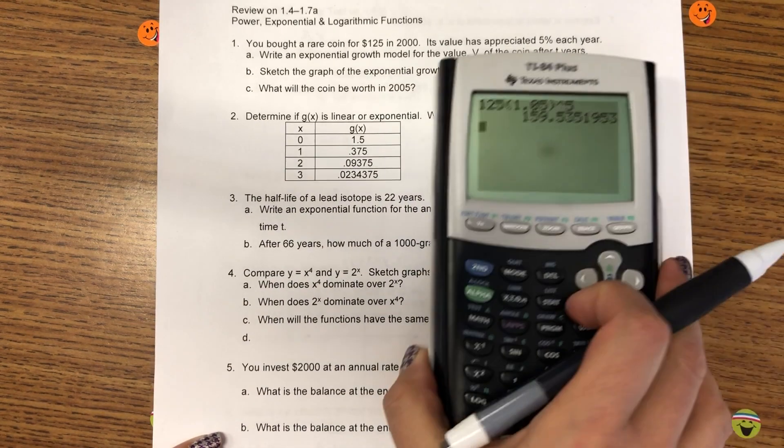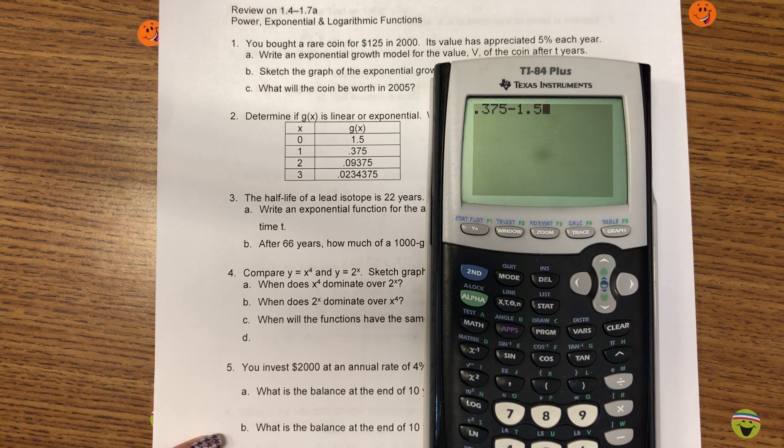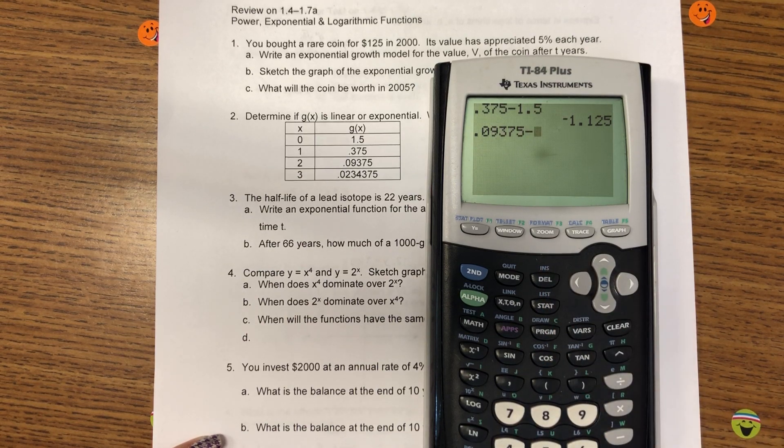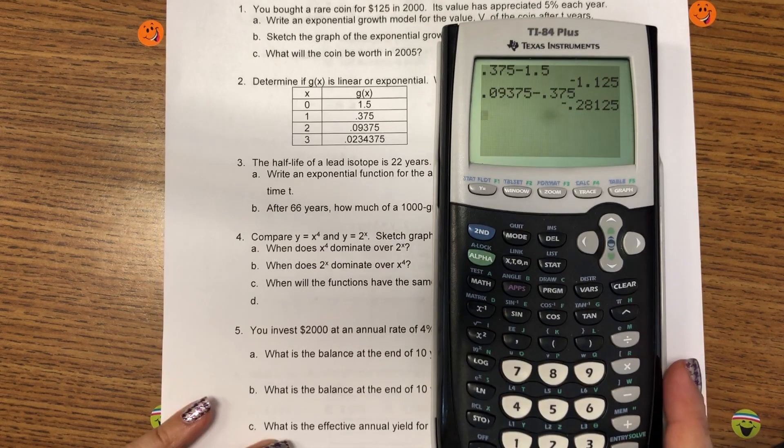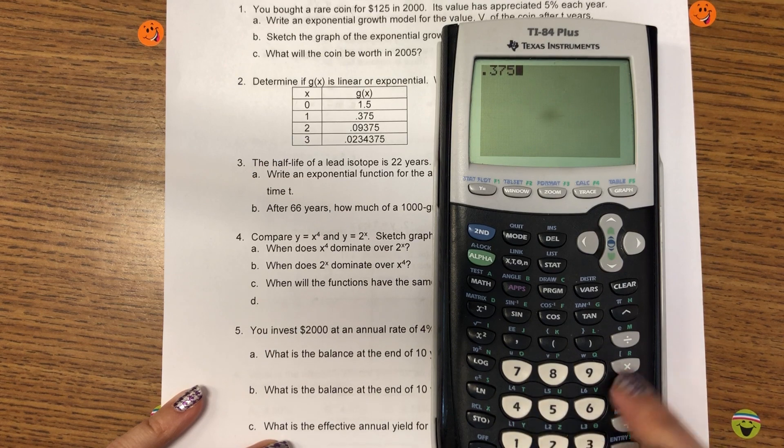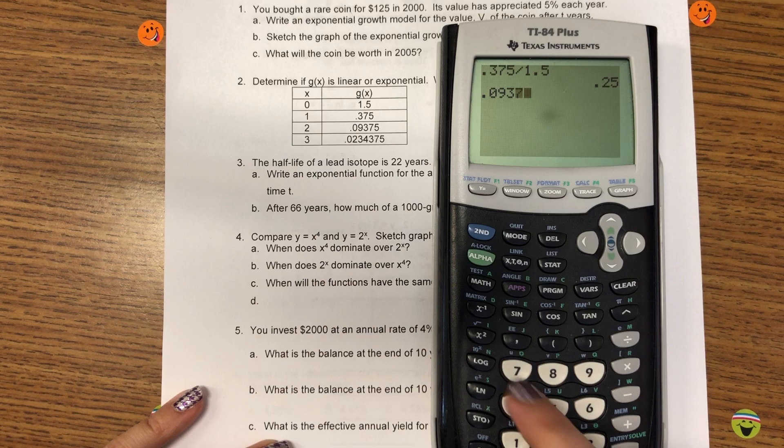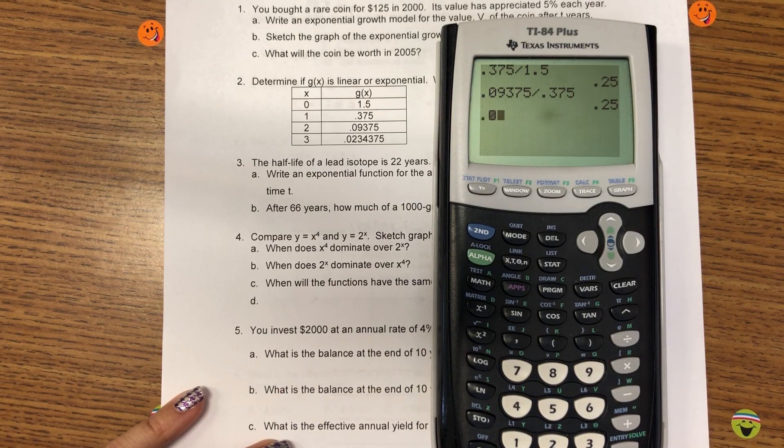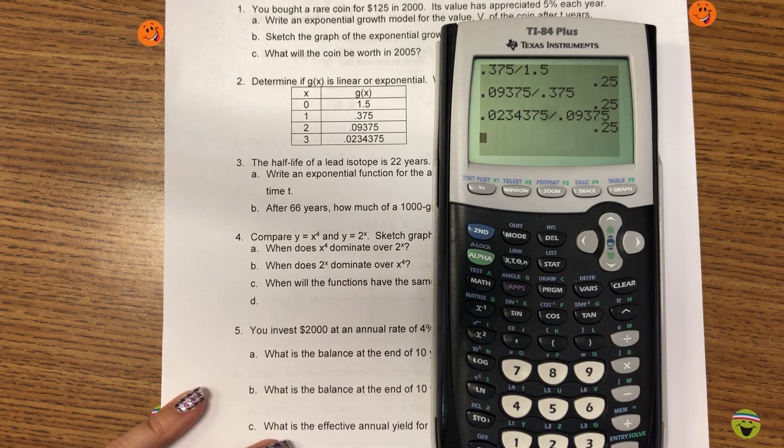And the direction, there's only one table, and the directions say, is it linear or exponential? And then write an equation. So, to test if it's linear, the difference in my Y values will be constant. I don't think that's the case, but let me just check. Those are not the same number. They're not even close. So, let's check the ratio.